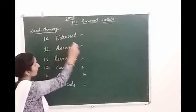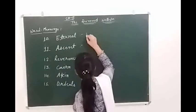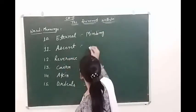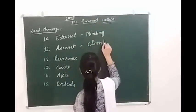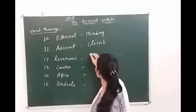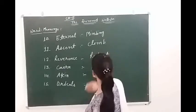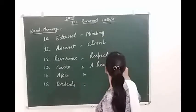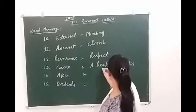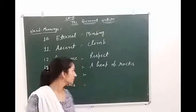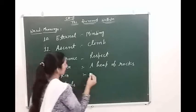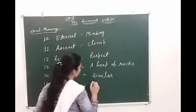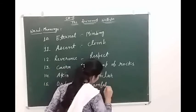Number 10, atenum. Atenum means pondering, kisi cheez ko kaafi gehrai se sochna, chintan karna, ok, pondering. Ascent. Ascent means climb. Reverence. Reverence means respect. Respect. Cane in arm, heap of rocks. Heap, heap of rocks, chattano ka dhher hota hai. Atenum, atenum means similar, painful experiences.